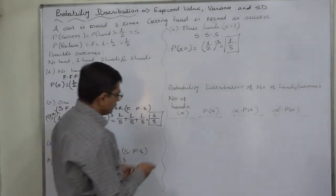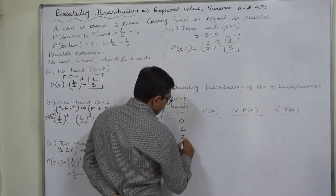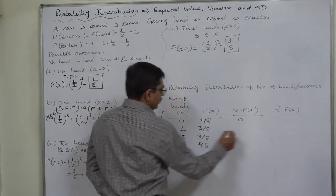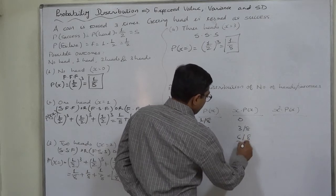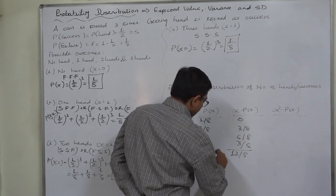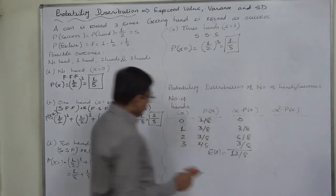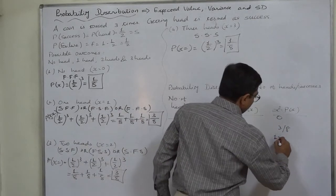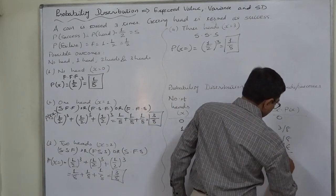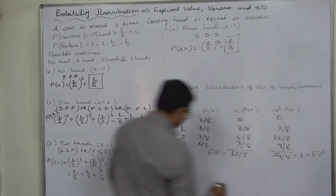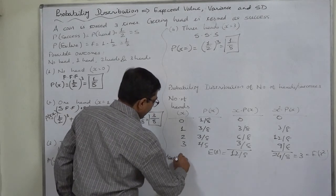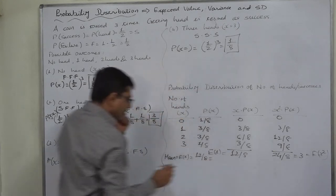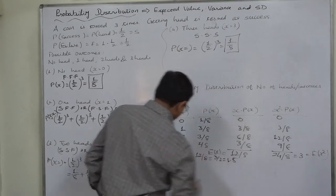The number of heads (successes) are 0, 1, 2, 3 with respective probabilities 1/8, 3/8, 3/8, 1/8. The values of x·P(x) are: 0, 3/8, 6/8, 3/8, summing to 12/8. So E(X), the mean, is 12/8 = 1.5. For E(X²), x²·P(x) gives 0 + 3/8 + 12/8 + 9/8 = 24/8 = 3.